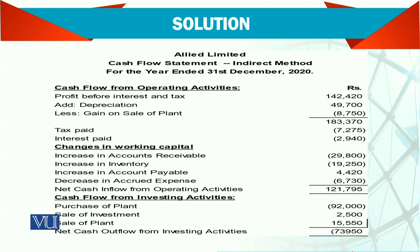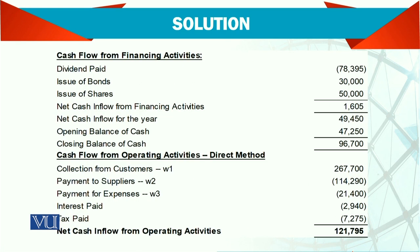Then we have cash flow from investing activity: purchase of plant, sale of plant, and sale of investments — those are the investing activity amounts. For cash flow from financing activity: dividend paid, issue of bonds, issue of shares give us the cash inflow from financing activities.